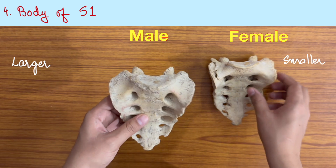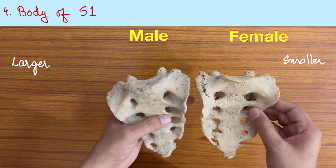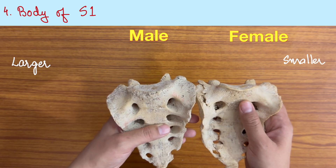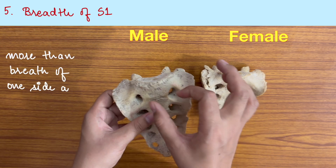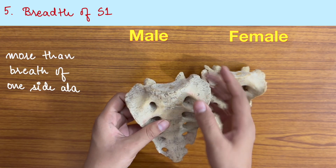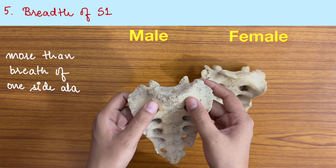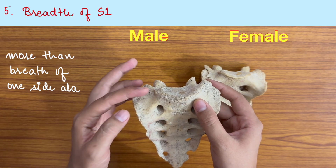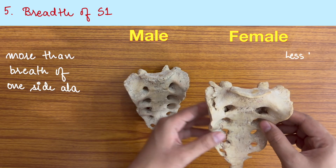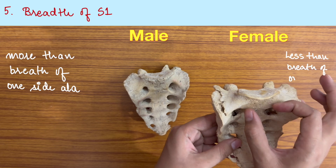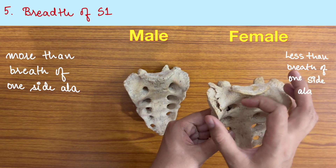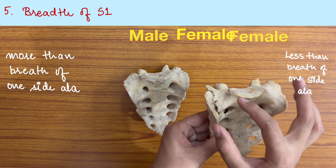The first sacral vertebra is larger in the male as compared to the female, where it is smaller. Also, the breadth of the first sacral vertebra (S1) is larger than the breadth of the ala in the male, but in the female the breadth of the first sacral vertebra is smaller than the breadth of one side ala.